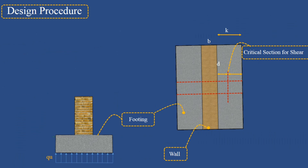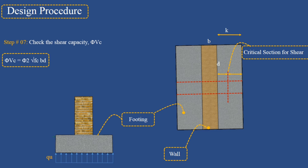Step 7: Check the shear capacity. Shear capacity equals φ × 2 × √f'c × b × d. If the critical shear is less than the shear capacity, the footing depth is acceptable. If the critical shear is larger or considerably smaller than φ × shear capacity, choose a new thickness and repeat the previous steps.